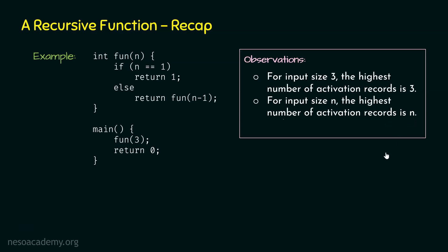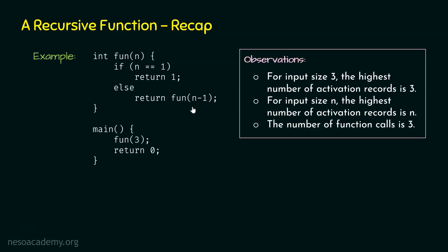The maximum number of activation records within a stack will be n when the input size is n. There is one more observation: the number of function calls is also 3 when the input size is 3. We call fun(3), then fun(2), then fun(1) — because the function calls itself and decrements n by 1 each time. So there are a total of 3 function calls. For input size 3, the number of function calls is 3.